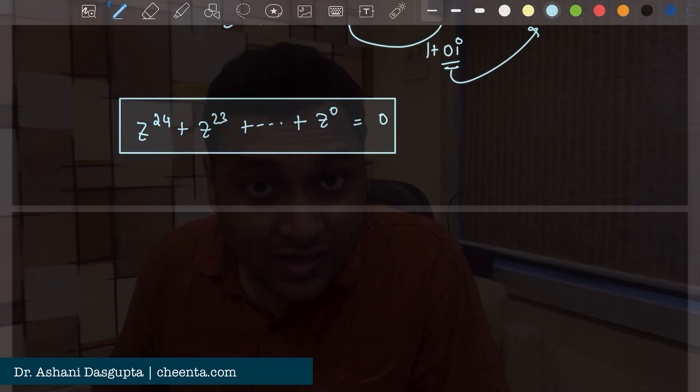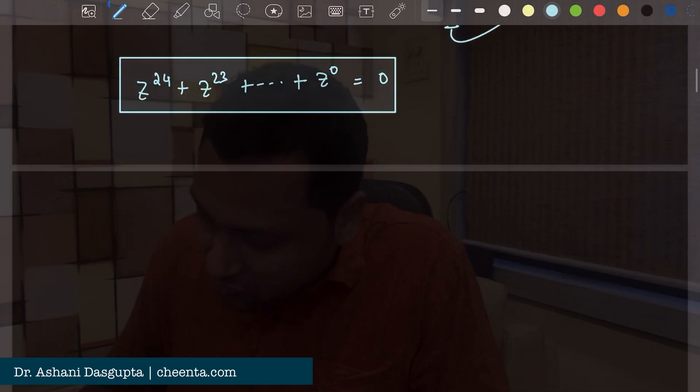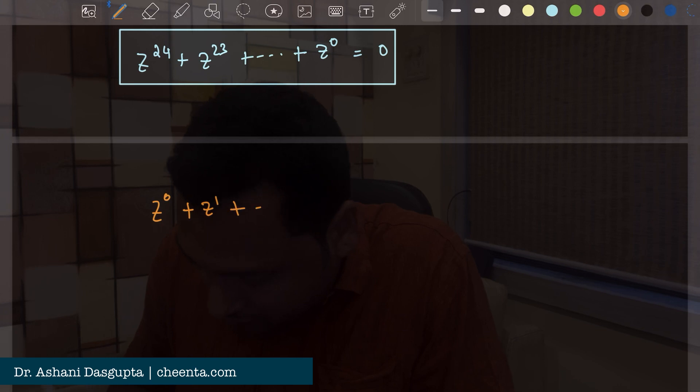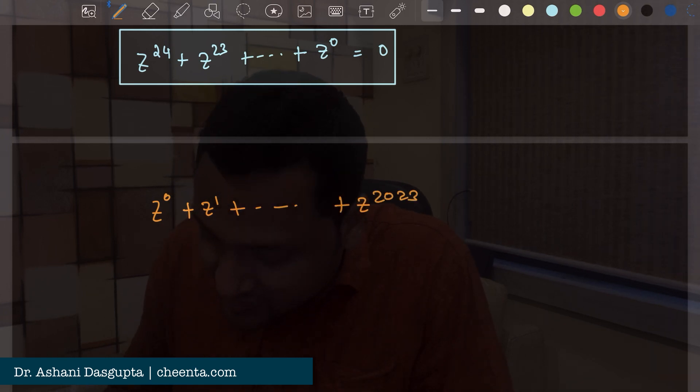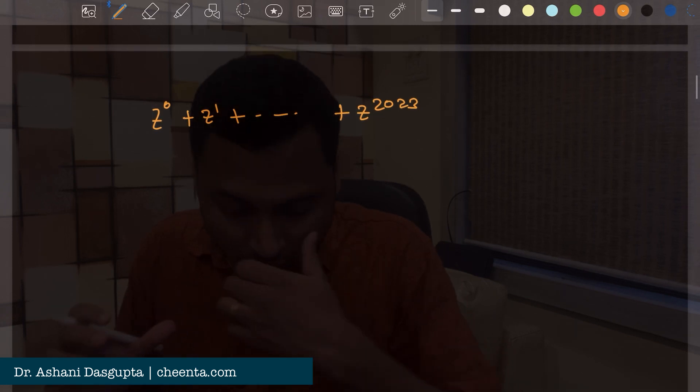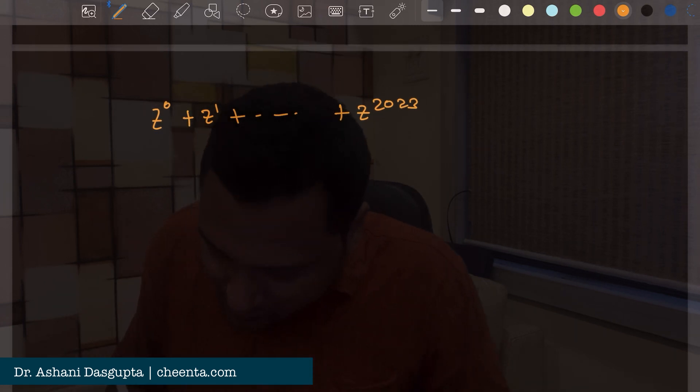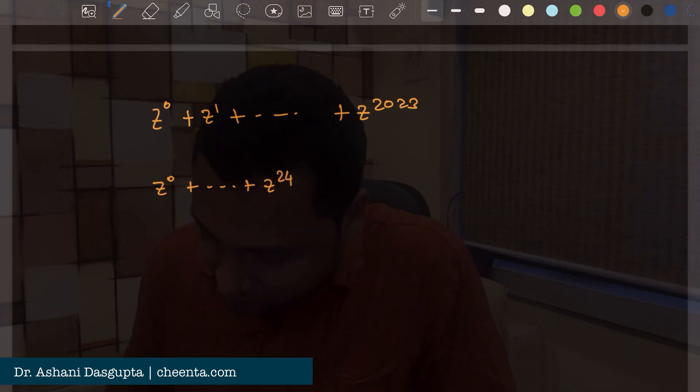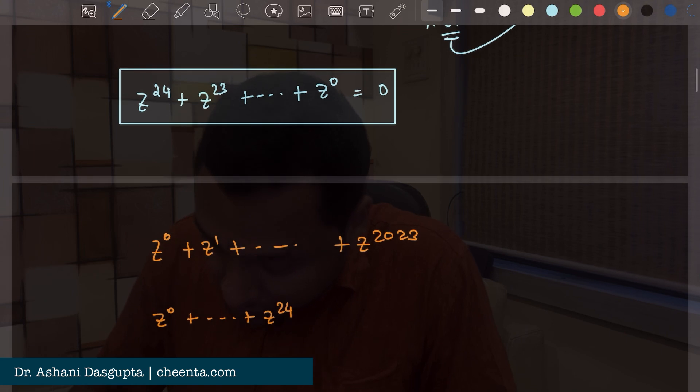We are almost done with the problem because now what we can do is that we want z to the power 0 plus z to the power 1 up to z to the power 2023. So we can break it down into pieces which are 0. So first piece would be z to the power 0 up to z to the power 24. That is 0. That's what we just found out.